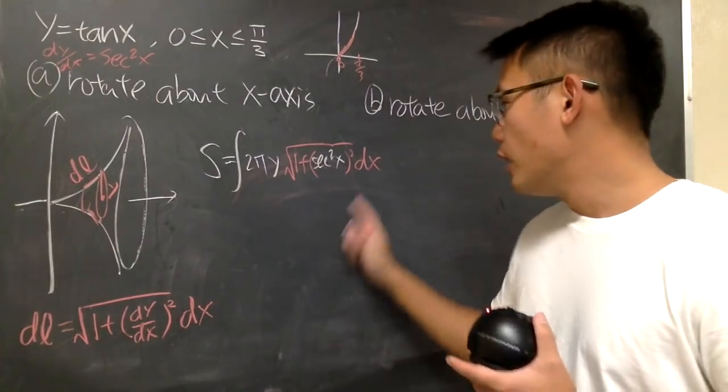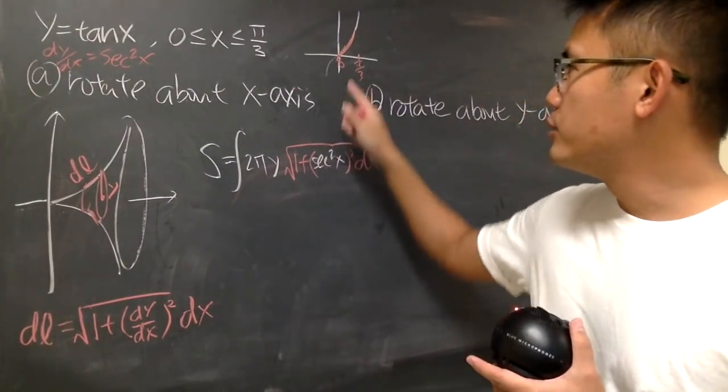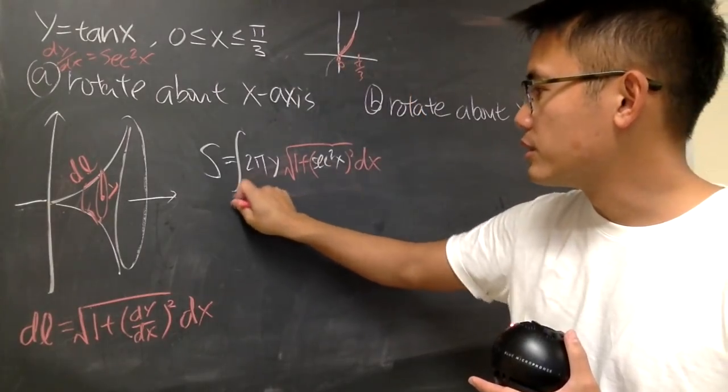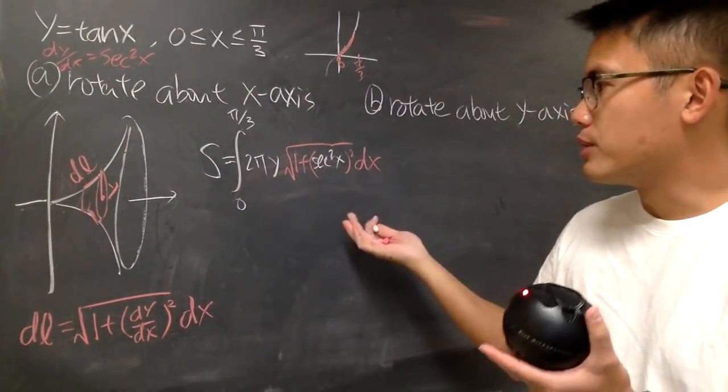You are in the x world, so pay attention to the x value. It goes from 0 to pi over 3. So 0 to pi over 3. That's pretty much it.